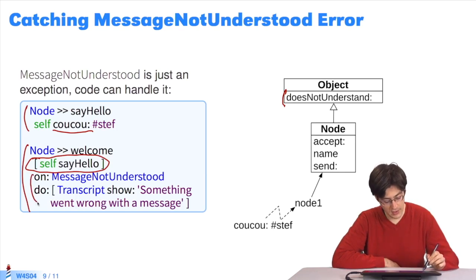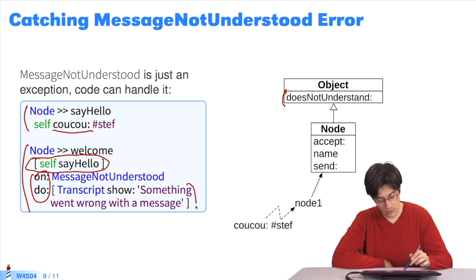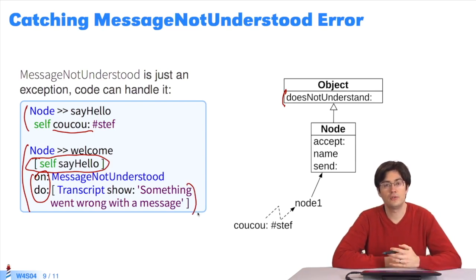The MessageNotUnderstood exception will be raised. The code here, following on:do:, is used to catch exceptions, like try-catch in Java. A later sequence of the course will go into these exceptions. The point here is to notice that this code is the same as Java's catch and it will be executed for every exception.